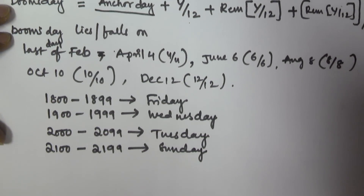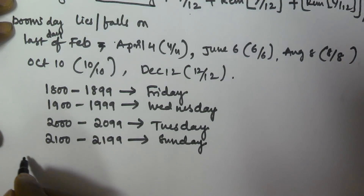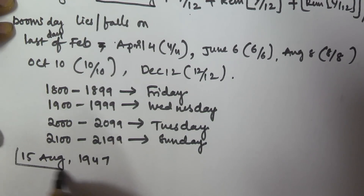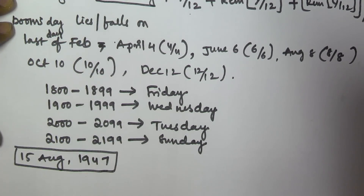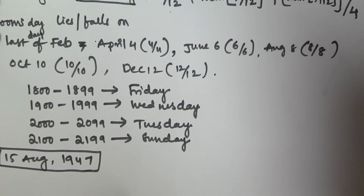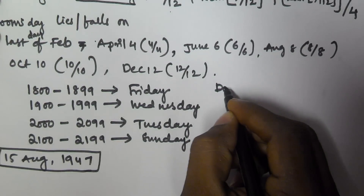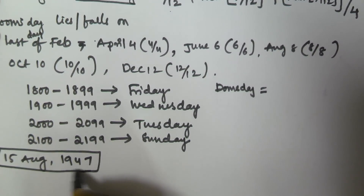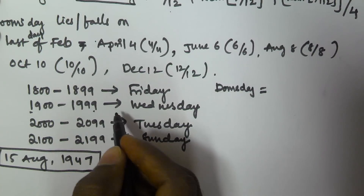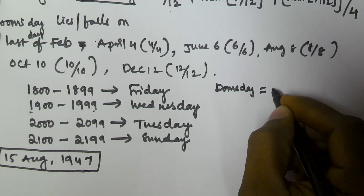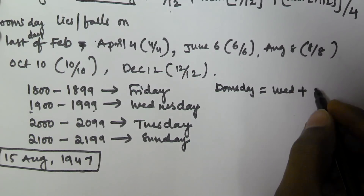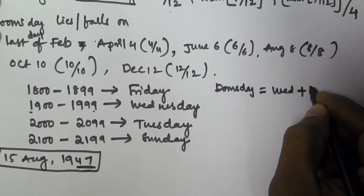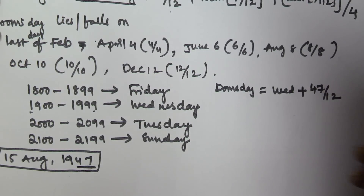Let's solve one example: let's find the weekday of 15th August 1947 using Doomsday. So for Doomsday, the given year is 1947, which falls between 1900 to 1999, so the Anchor Day is Wednesday. We take only the last two digits of the year, which is 47, so 47 divided by 12.